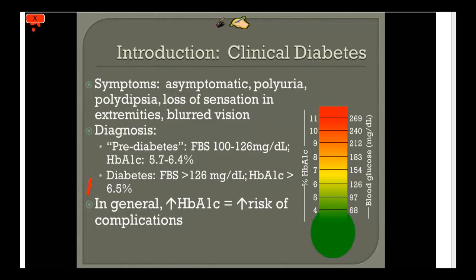HbA1c — hemoglobin A1c — relates to non-enzymatic glycosylation of hemoglobin. We measure the percentage of glycosylated hemoglobin in the bloodstream. The cutoff for diabetes is 6.5% and above; below 5.7% is healthy; and 5.7% to 6.4% is the pre-diabetes range. As HbA1c and blood glucose increase, the risk of complications greatly increases — so controlling blood sugar is critical.